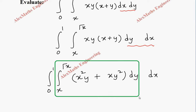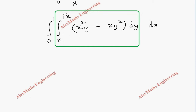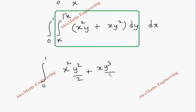We are going to complete the integration with respect to y first, this part alone. So it will be integral 0 to 1 — with respect to y, x is a constant, so x²y integrates to x²y²/2, and xy² integrates to xy³/3. We have the limit from x² to √x, and at the end we have dx.